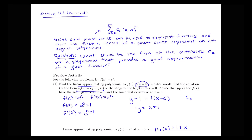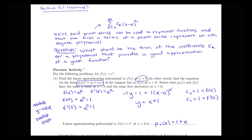Notice that c_0 equals 1 was based on the y-value of the function, and c_1 equals 1 was based on the derivative. The reason we created our line this way is that we found a line with both the same y-value and the same slope as our given function. So near x equals 0, along that line, we have a decent approximation to our curve.